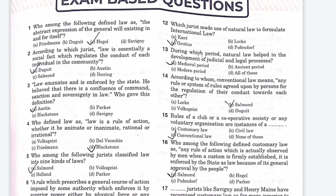The next question: during which period did natural law help in the development of the judicial and legal process? Option A is medieval period, Option B is ancient period, Option C is modern period, Option D is all of these above. The right answer is Option A, medieval period.